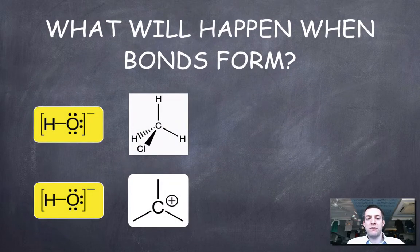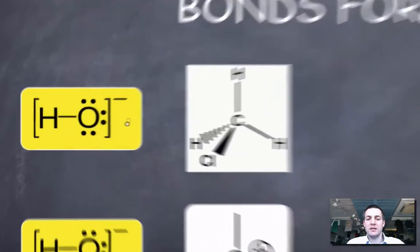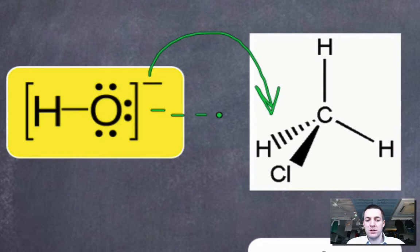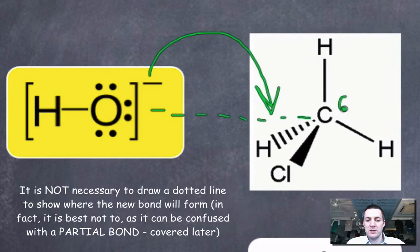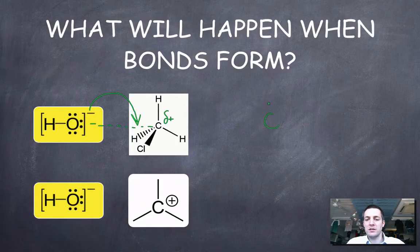What will happen when bonds form? Well it depends what we're starting with. If we start with a negative thing and a neutral thing, then this negative charge is going to come in here, or in other words this pair of electrons. We're going to form a bond between this slightly positive thing and the nucleophile. And now we're going to end up with something that is overall negative. Because if we started with a negative thing and a neutral thing, then this thing that we end up with is going to be negative. There's going to be a new bond here. This carbon has now got five bonds, it's got three to hydrogens.